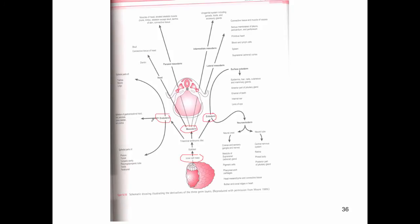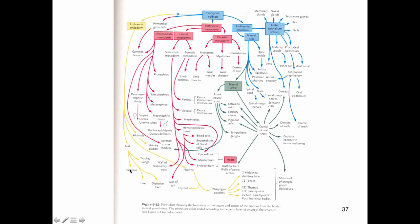The endoderm forms the gut—all of the gastrointestinal tract—but it also forms all of the respiratory system and much of the epithelial portions of things like the thyroid gland, the tonsils, the parathyroid gland. This is just a much more elaborate mapping of these primitive cell types starting from the embryonic epiblast. You see the different differentiation steps until you finally get to all of the different parts of the body.